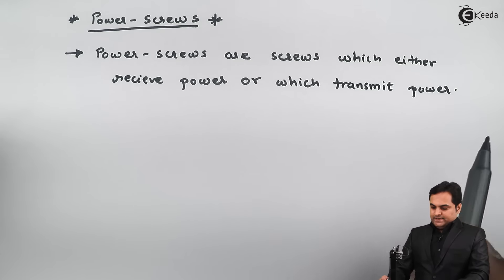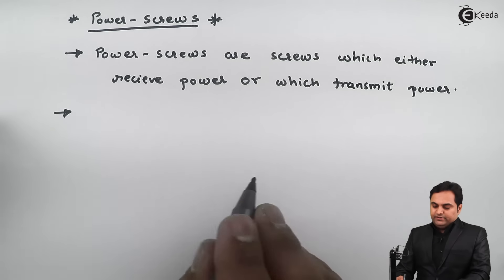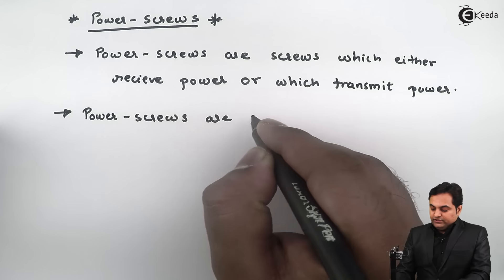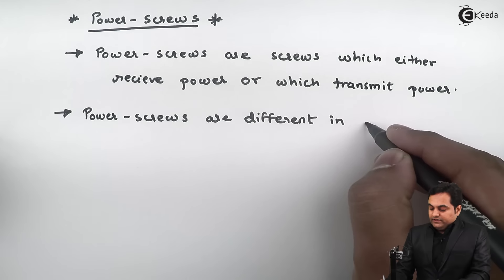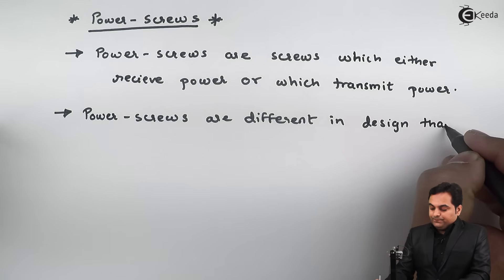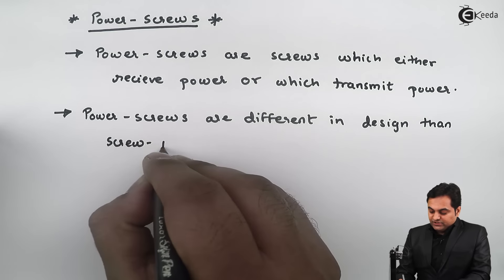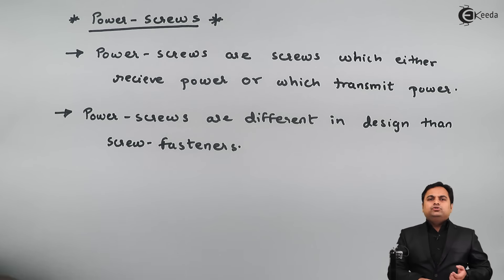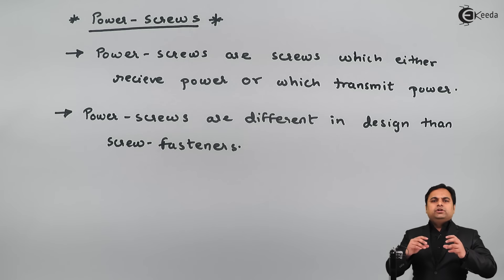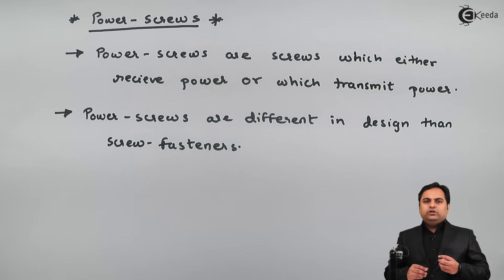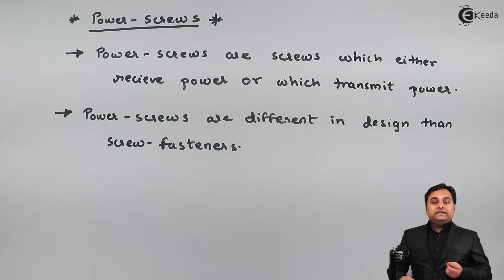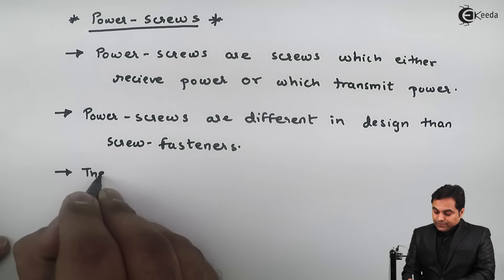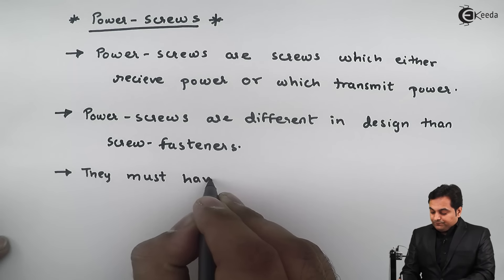From this it is very much clear that power screws are different in design from screw fasteners. Screw fasteners are screws which are used as a temporary joint — if we have two parts joined by screws that is called a screw fastener. But power screws, since they are transmitting power, their design is different from that of a screw fastener.